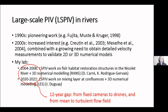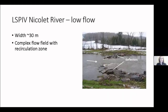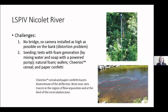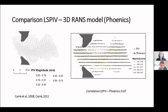Now the focus is also to validate 3D LES (Large Eddy Simulation) models, and the drone really made the big difference. A quick recap of that earlier work on the Nicolet River in Quebec — a fairly complex flow field with recirculation, with deflectors put in place for a fish habitat restoration project. At the time we were trying to find the best way with cameras installed on the banks as high as possible to limit distortion. The other challenge was seeding — we tested natural foam, wafers, Cheerio cereal (which fish ended up eating), and paper confetti, which proved to work best, though there were always problems with some zones having no seeding.